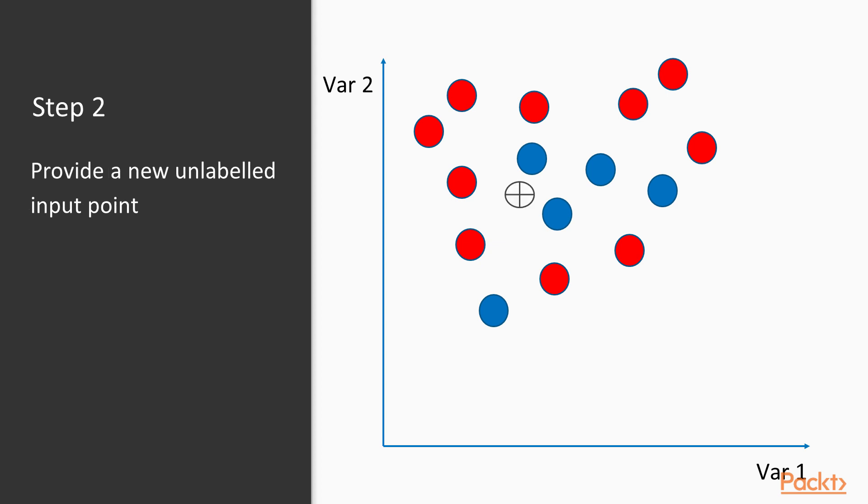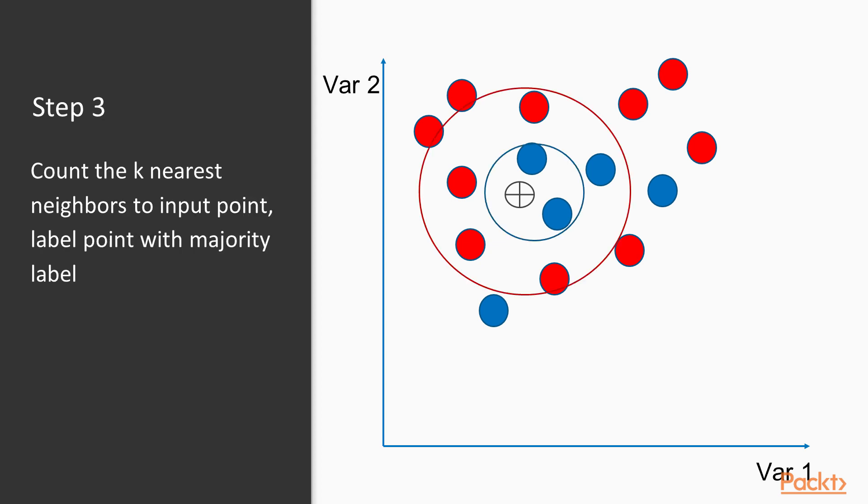If we provide a new unlabeled point, say here for instance, we then need to count its k-nearest neighbors and determine what the majority of those neighbors are labeled with.